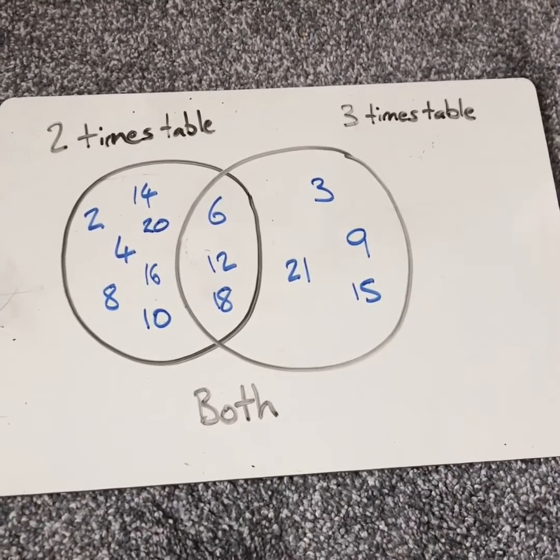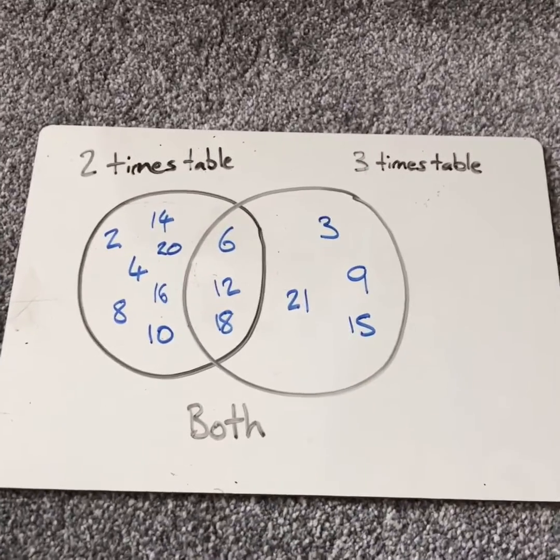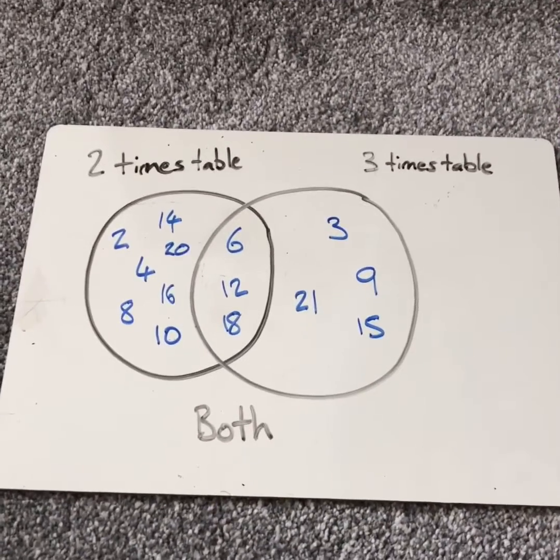This is what we call a Venn Diagram. It can be used for so many different things from rocks to leaves to cars to football teams. I find it to be particularly useful to look for patterns in number.